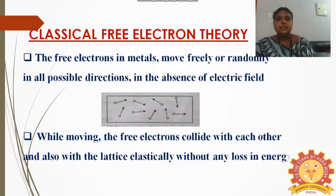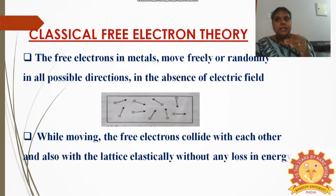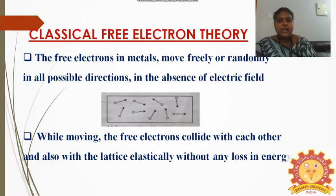The Classical Free Electron Theory is the basic theory. It is a macroscopic theory and it clearly explains the movement of electrons. First, let me see how the electrons are moving inside the metal in the absence of electric field. Consider this diagram. The free electrons in metals move freely or randomly in all possible directions in the absence of electric field.